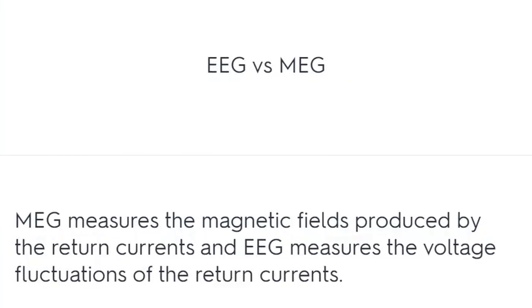EEG versus MEG: MEG measures the magnetic fields produced by the return currents, and EEG measures the voltage fluctuations of the return currents.